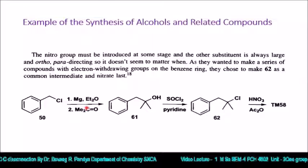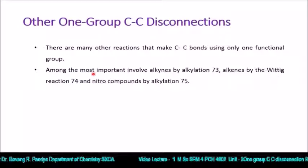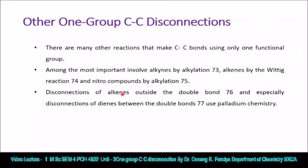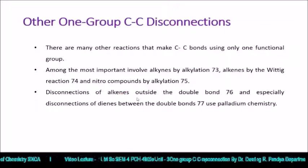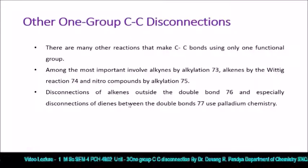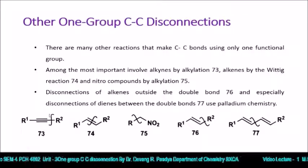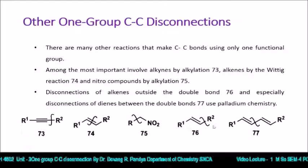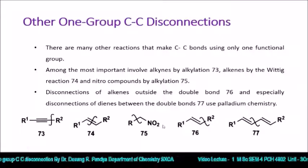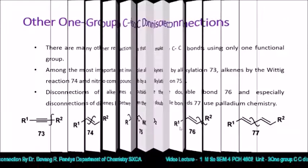Other one group CC disconnections: there are many other reactions that make C-C bonds using only one functional group. Among the most important are alkynes by alkylation, alkenes by Wittig reaction, and nitro compounds by alkylation. Disconnection of alkenes outside the double bond, and especially disconnection of diynes between the double bonds, uses palladium chemistry. Disconnections involving acetylene, alkene groups, and aliphatic nitro compounds will be studied in upcoming lectures in detail.